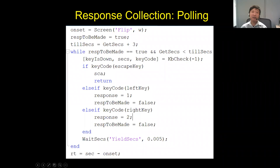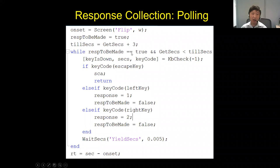Here are two example code snippets copied from the Psychtoolbox website. In the first case, we are polling using KbCheck(-1) to read all keyboards in a while loop. If a response is made, we stop. Or if the time step reaches our end time — three seconds from now — we stop even if there's no response. That's often the case; we will often have missed responses.